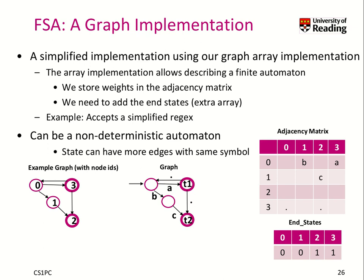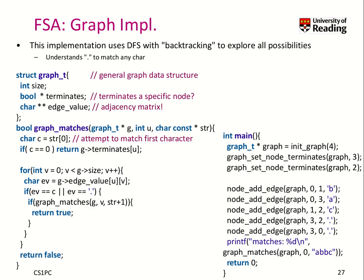The implementation we will talk about is able to recognize even these non-deterministic cases, but it won't be that efficient. That doesn't matter for the sake of this discussion. Let's have a look at our graph implementation. We remember our graph implementation used the structure where we used our adjacency matrix with the edge values. Our edge values are just simple characters, and we have this array that says if something terminates or not. If the graph matches a certain string, which is basically our regX match function, we can use a recursive function from our graph from a certain state U to find out if this matches a string.